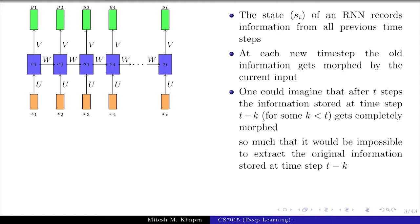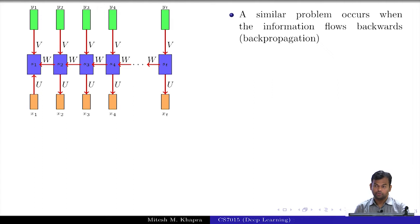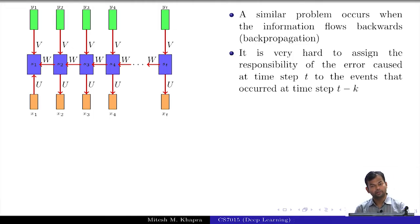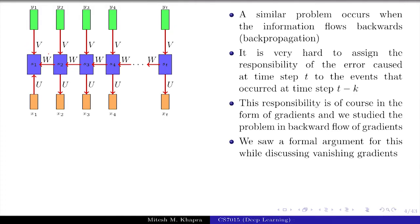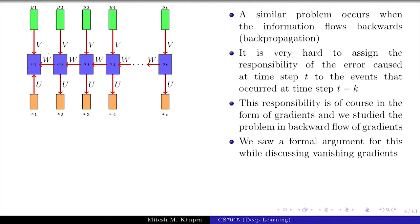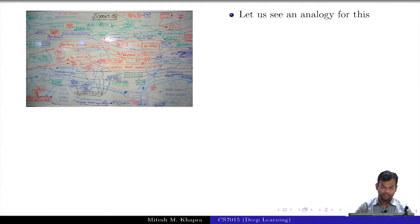That is the problem with recurrent neural networks and we will tie it back to the problem that we had with the vanishing and exploding gradients. In fact, a similar problem occurs when the information flows backwards during backpropagation. It is very hard to assign the responsibility of the error caused at time step t to arbitrary time steps before it, to very far away time steps. That is the vanishing gradient problem, because you have this multiplicative term and the gradients vanish. So both during forward propagation the information vanishes and even during backward propagation the information vanishes. And we saw a formal argument of this while doing vanishing gradient.